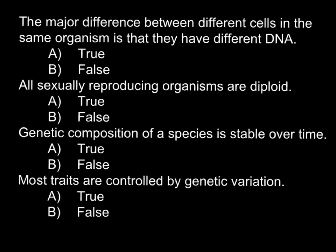Here is the first question: the major difference between different cells in the same organism is that they have different DNA. This is false, because every single cell in our organism has the same genetic composition. There are some exclusions — some cells may have mutations, for example, this is how cancer arises. Some cells may also be tetraploid or polyploid, for example some cells of the liver, but overall the genetic composition of each cell is the same.